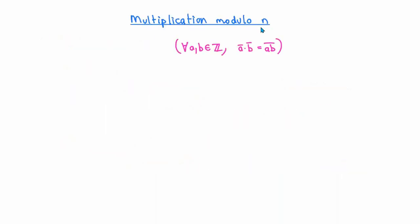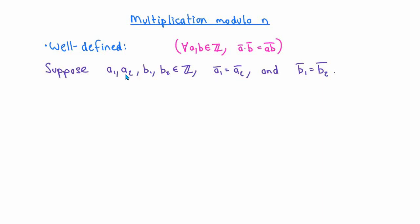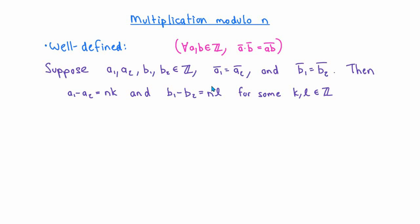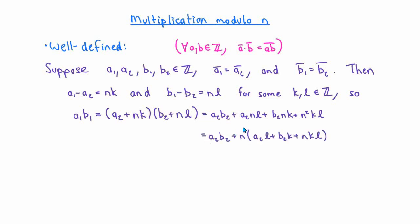Now let's talk about multiplication modulo n. Just as before, we want to prove that this binary operation is well defined. Suppose a1, a2, b1, b2 are integers with ā1 = ā2 and b̄1 = b̄2. Then a1 − a2 = nk and b1 − b2 = nl for some integers k and l. Multiplying a1·b1 = (a2 + nk)(b2 + nl), expanding and collecting terms with a factor of n, gives a1b1 = a2b2 + n·(integer). So n divides a1b1 − a2b2, meaning a1b1 and a2b2 define the same residue class modulo n. Multiplication is a well-defined binary operation on residue classes modulo n.